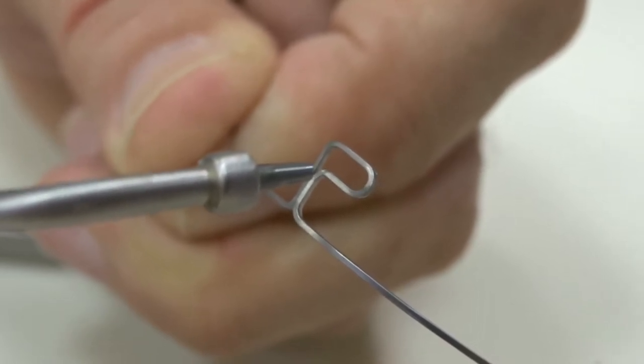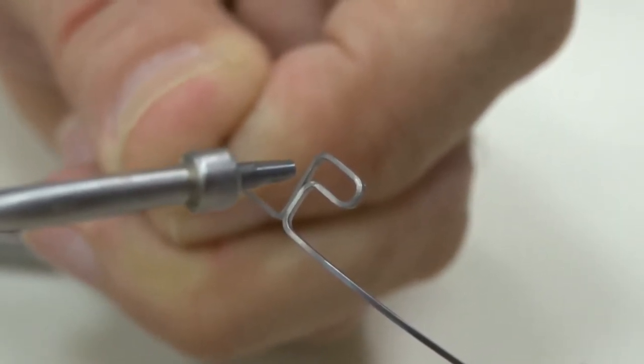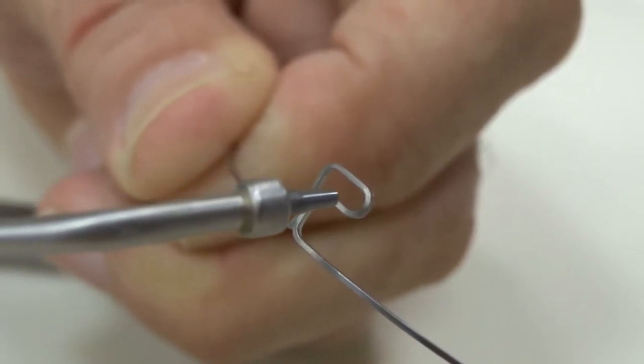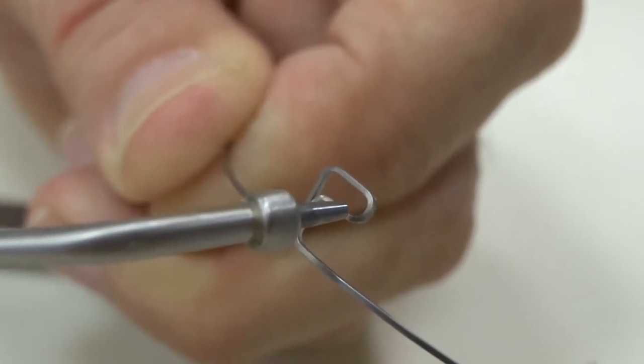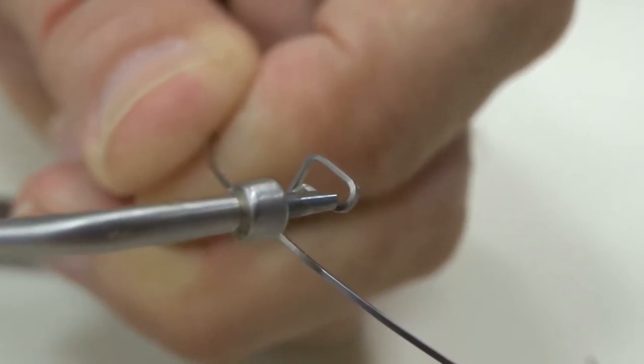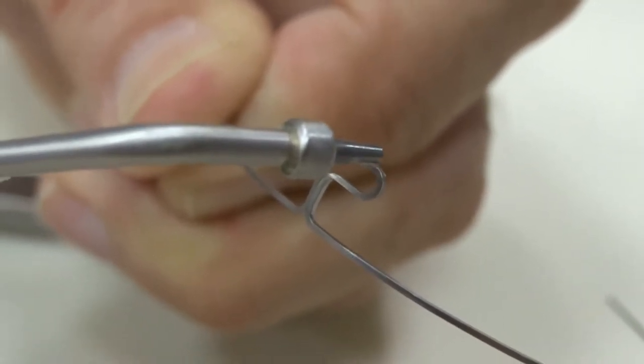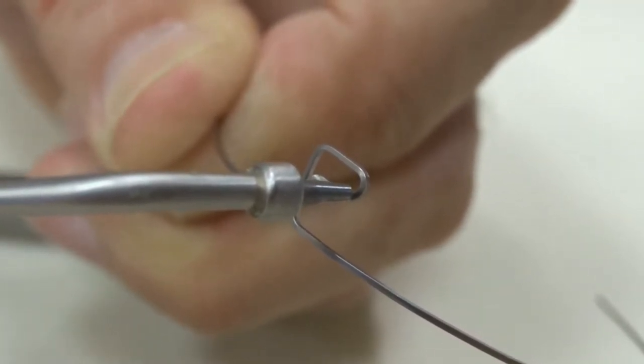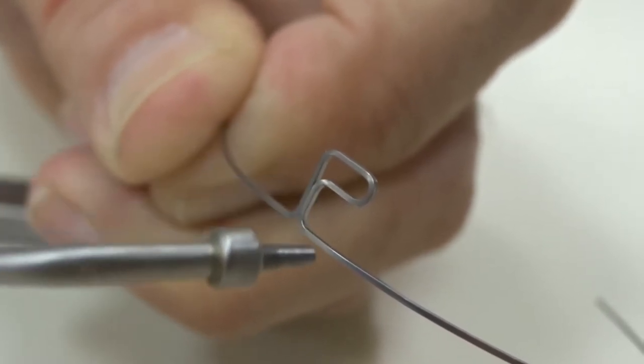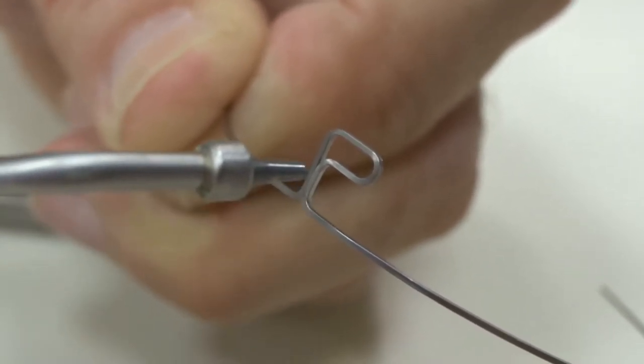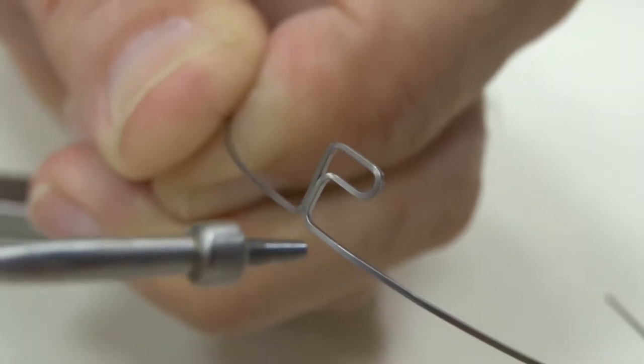If, for example, we wanted to make a step-down in torque, intra-orally I could place a Weingart at this angle or I could place it at this angle and squeeze. That would allow this anterior portion of the wire to step down and torque.